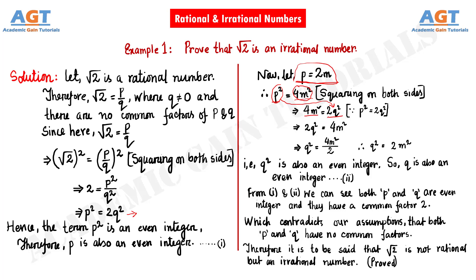For convenience of calculation, we rearrange: twice Q square on the left hand side and 4M square on the right hand side. Then on the next line, Q square equals 4M square divided by 2, which simplifies to Q square equals twice M square. Now Q square is also a multiple of 2, so Q square is an even integer, and since Q square is an even integer, Q is also an even integer.